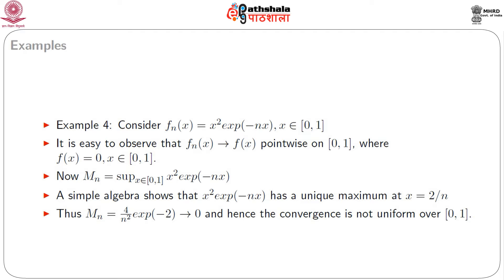Consider the sequence x²·e^(−nx) for x ∈ [0, 1]. It is easy to observe that f_n(x) converges to f(x) = 0 pointwise on [0, 1]. A simple algebra shows that x²·e^(−nx) has a unique maximum at x = 2/n, and thus M_n = (4/n²)·e^(−2), which goes to 0. Hence the convergence is uniform over [0, 1].